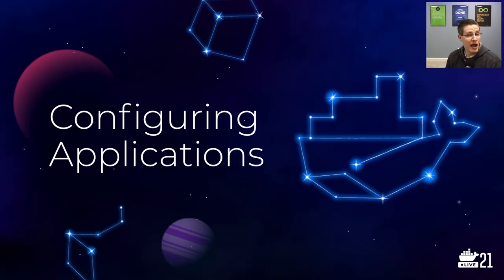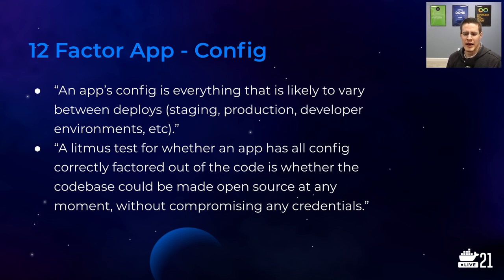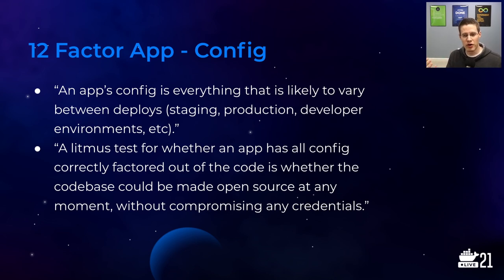I want to talk specifically about configuring applications. If you haven't heard of the 12 Factor App, I'd highly encourage you to check it out — it's different principles on how to build cloud-native applications so your app can be portable, written before containers were really a thing. One of those factors is called 'config,' defined as everything that is likely to vary between deploys — between staging, production, developer environments, etc. A litmus test: could the codebase be made open source at any moment without compromising any credentials? That's config — what's varying, what are our secrets, what are our credentials.